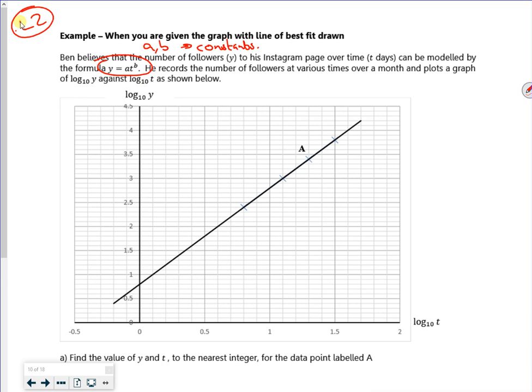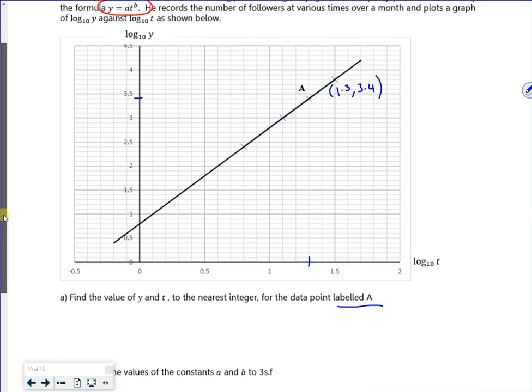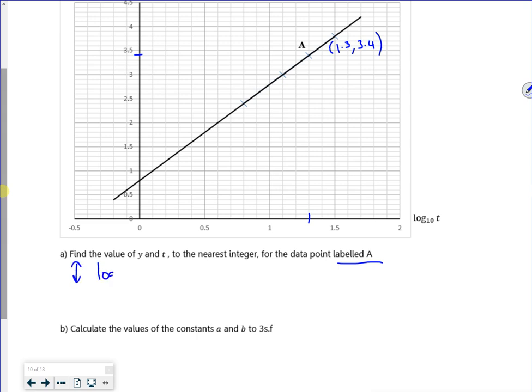So find the value of y and t to the nearest integer for the data point labeled A. We should be able to read off this and say that A is 1.3 comma 3.4. You don't really need the straight line because these are just log values. So going up is log y, and that's equal to 3.4. So y is 10 to the power of 3.4, which is roughly, to the nearest whole number, 2512 followers.